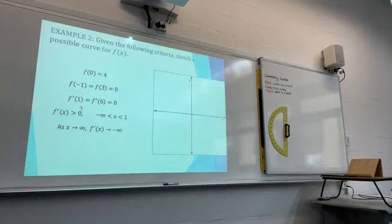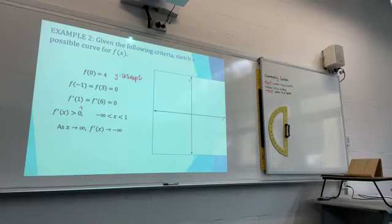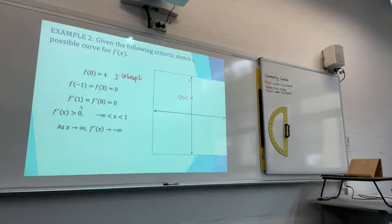Given the following criteria, sketch a possible curve. Start off with f(0) equals 4 — that is the y-intercept. f(−1) equals f(3), which equals 0 — those are your roots. When x equals −1, y is 0; when x equals 3, y is 0. So you know those are the x-intercepts. Plot all three points on the axis.